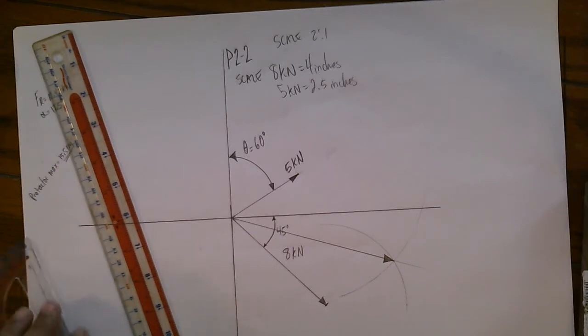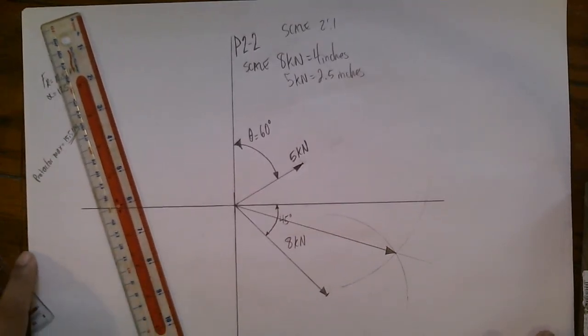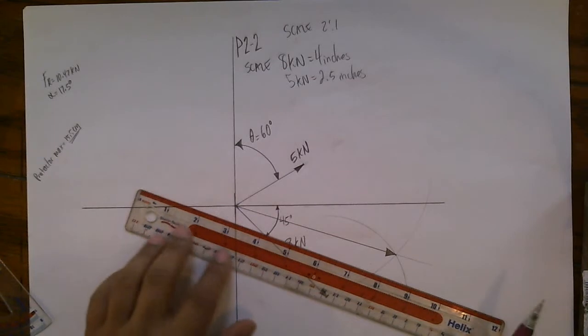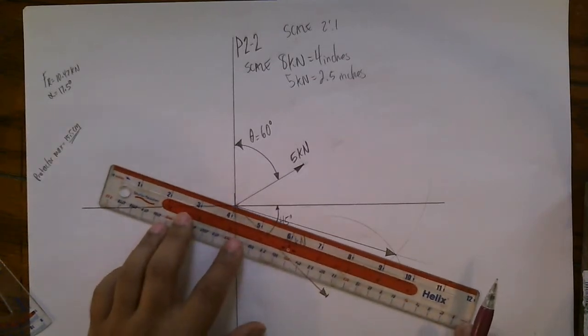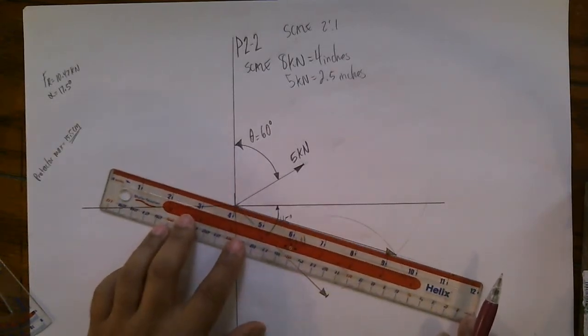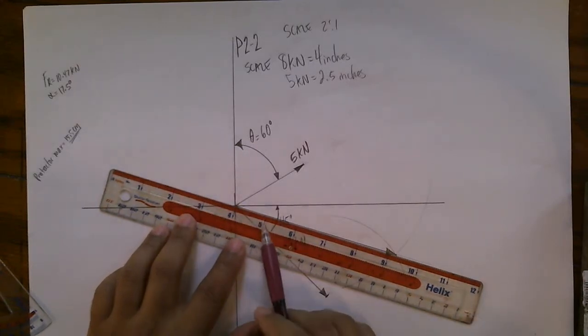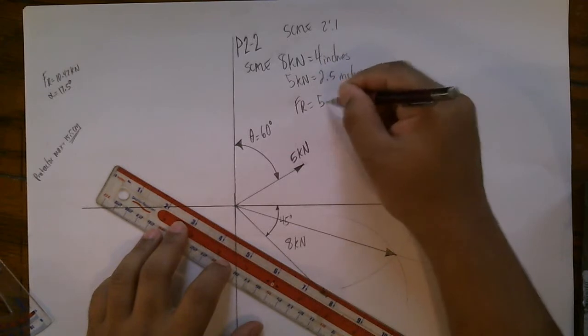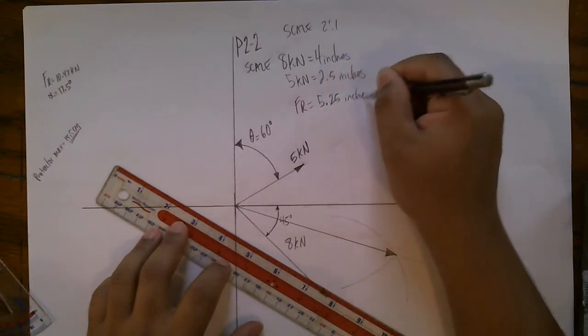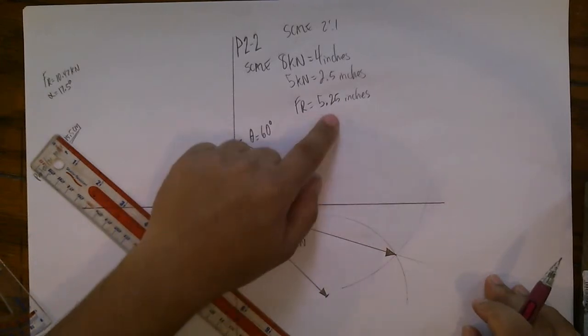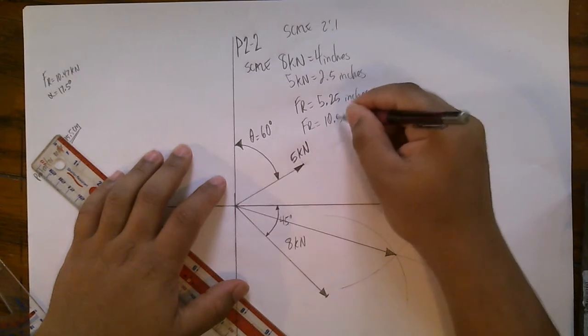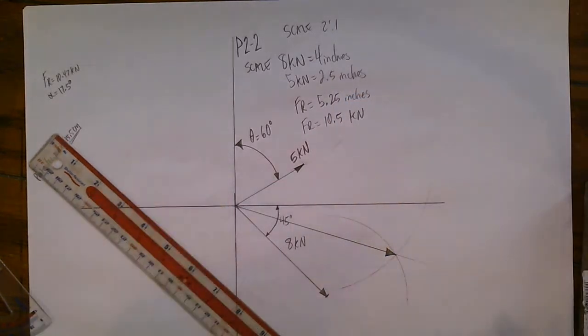And the next step is to measure this vector. I'm going to use the side of the inches, so I'll measure it from here to here: one, two, three, four, five, five and a quarter. So FR is 5.25 inches. If you follow your scale, FR is equal to 10.5 kilonewtons. That easy.